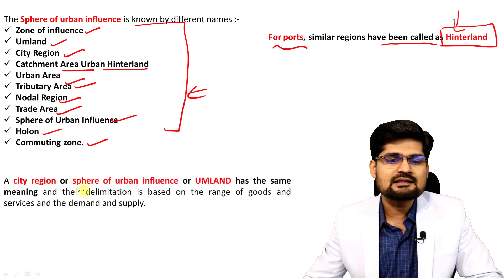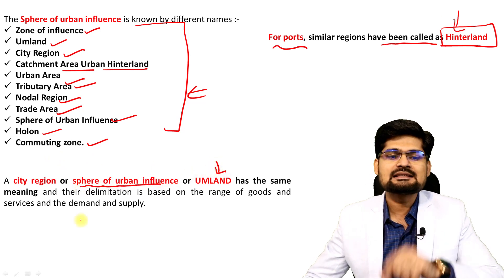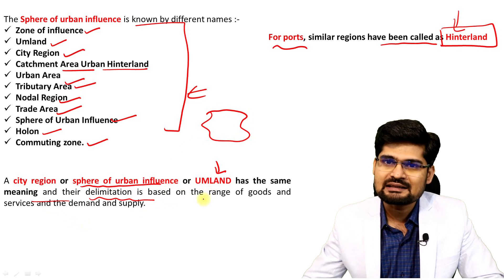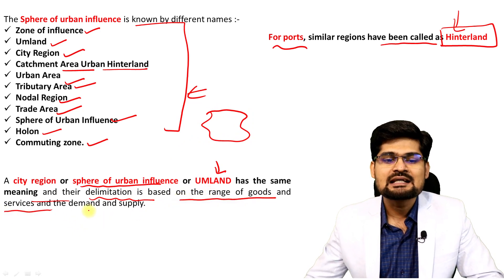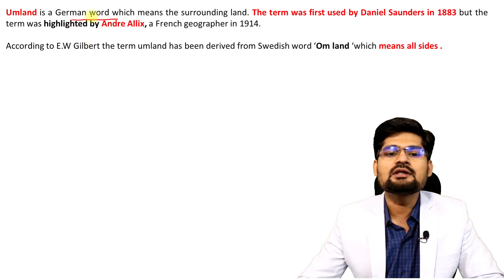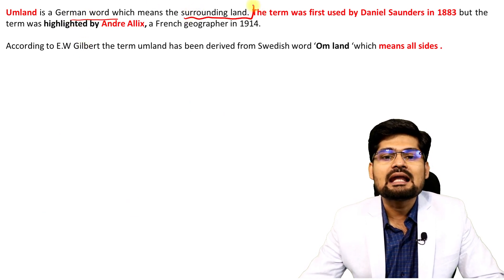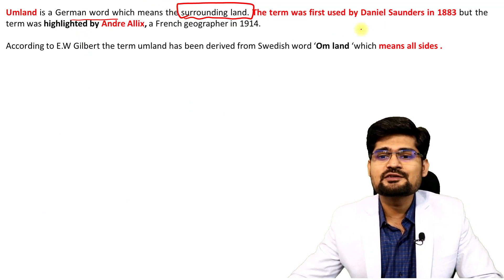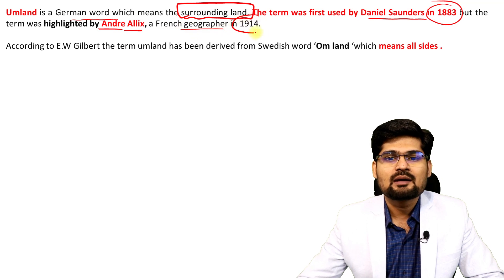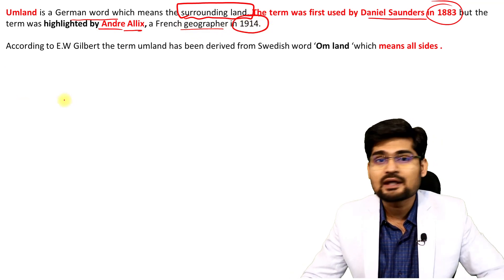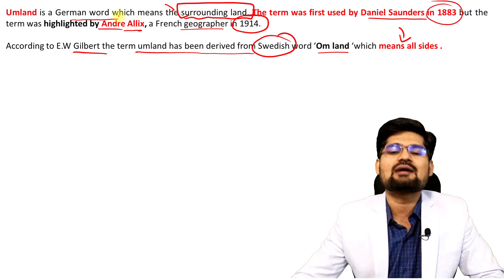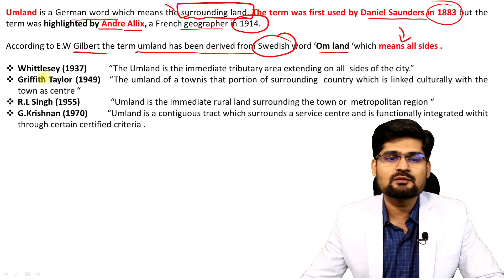A city region, sphere of urban influence, or umland all have the same meaning; their delimitation is based on the range of goods and services — that is, the demand and supply inflow-outflow networks. 'Umland' is a German word meaning 'surrounding land' — the land surrounding the urban area. The term was first used by Daniel Saunders in 1883, but was highlighted and popularized by Andre Alex, a French geographer, around 1914. According to Gilbert, the term has also been derived from the Swedish word 'umland' meaning 'all sides' or surrounding area.